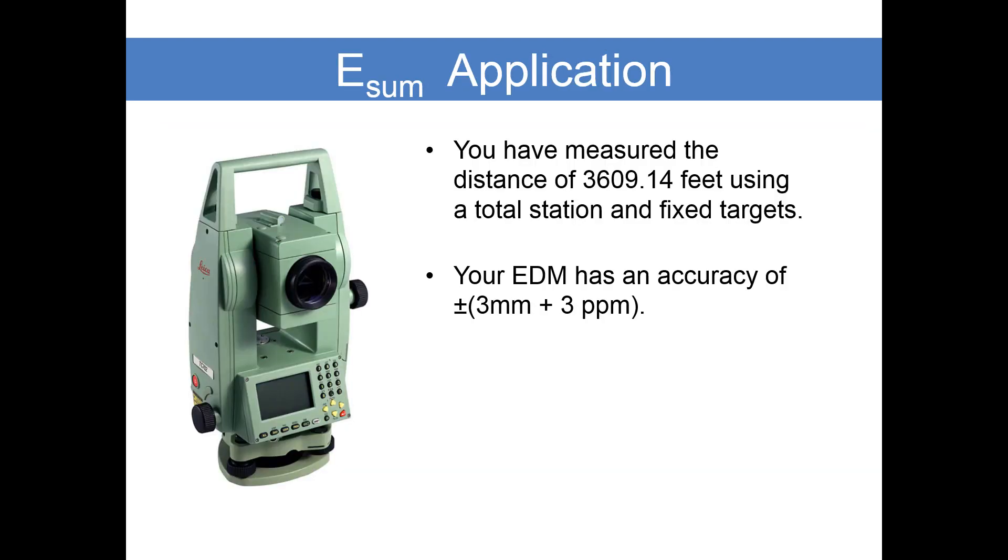We have not only our EDM accuracy, but the instrument centering error is estimated to be plus or minus 2 millimeters. When you set the instrument up using the tri-brac over the point, the tri-brac can be out of calibration. We accept that there's going to be some centering error. Likewise, your target is on a prism pole with a bipod. Our centering error is plus or minus 4 millimeters.